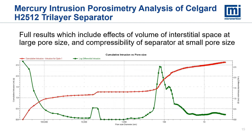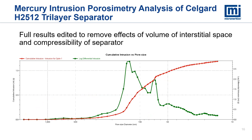This graph includes the cumulative pore volume distribution in red and log differential distribution in green for the H2512 tri-layer separator. Again, the modes to the left are due to interstitial filling and the small one to the right is due to compression, and again we can use the features of the AutoPore software to remove these effects. In the edited graph we see that this separator has a primary mode in the distribution, again skewed toward the small diameter side, but also shows a second mode on that skewed side. Note this is a tri-layer separator, not a monolayer one like the last sample.